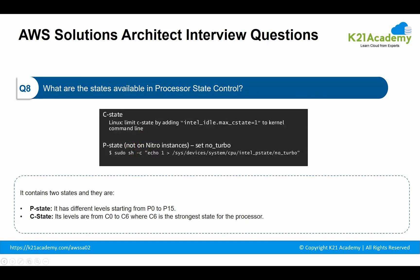The next question: what are the states available in processor state control? There are two states. The first is the P state, which has different levels starting from P0 to P15. P0 represents the highest frequency and P15 represents the lowest frequency. The next is the C state, with levels from C0 to C6, where C6 is the strongest state for the processor. It is possible to customize these states in certain EC2 instances, enabling users to customize the processor as per their need.